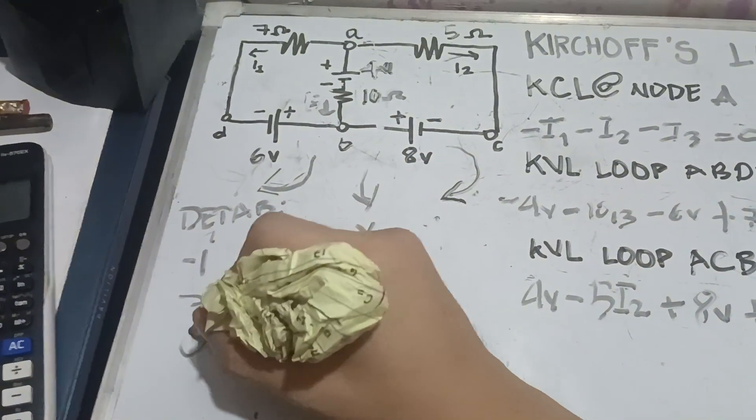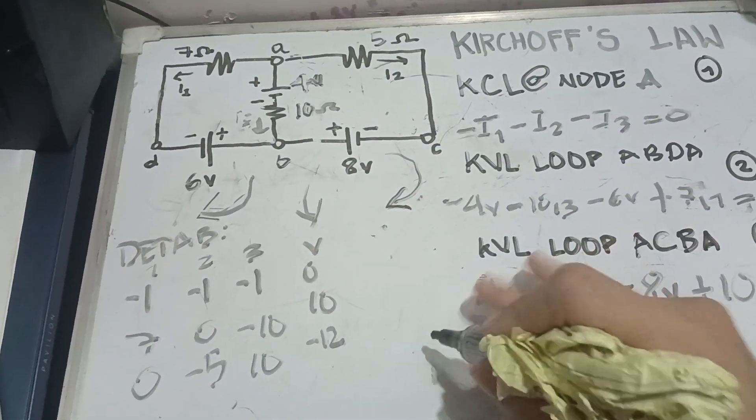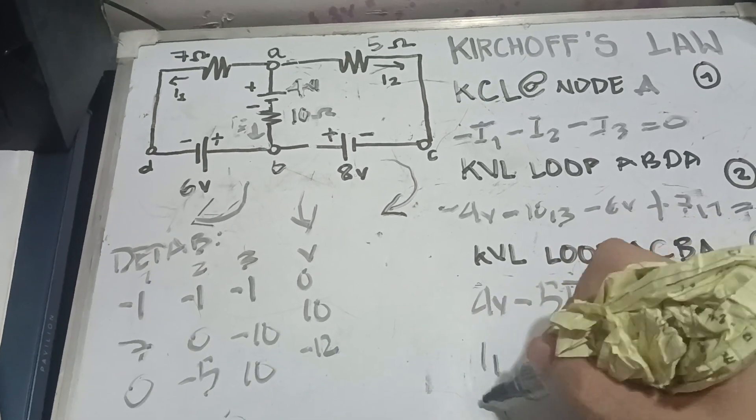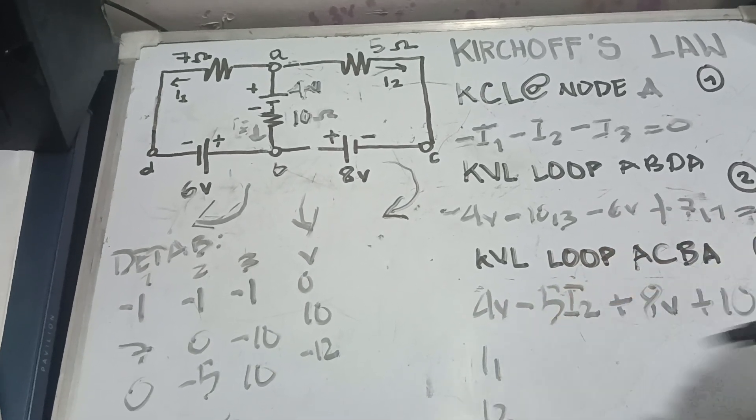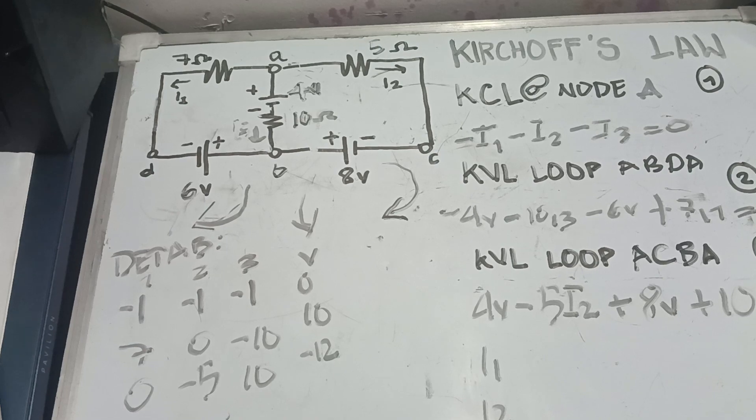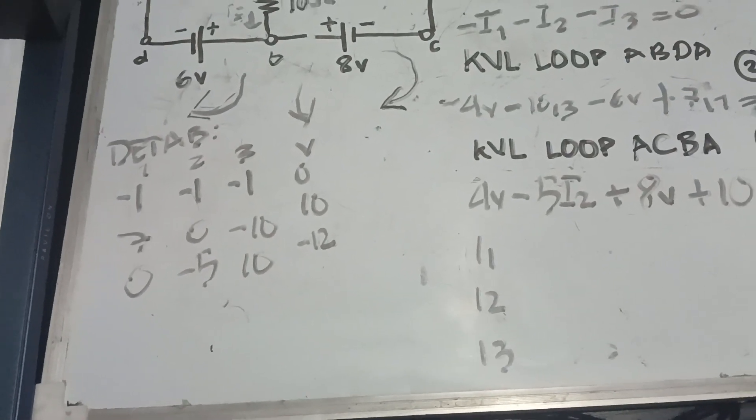Positive 10 I3 is going to be 10. We don't have any I1 in this KVL loop ACBA. So, we're going to write it to 0. So, now, let's write I1, I2, and I3. So, this is how we're going to do our Caltech technique. I'm going to point it at the phone towards our answer.